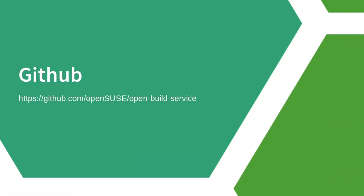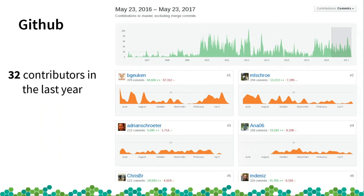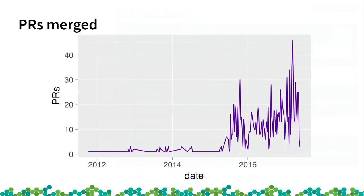Now let's talk about our project on GitHub. We have 125 contributors in the whole history of OBS, and 32 in the last year. The number of pull requests merged — you can see that in this period there were no pull requests, and then they started like crazy.